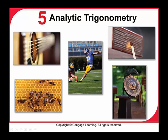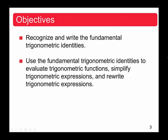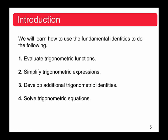We're going to move on to Chapter 5, which is about analytic geometry — we're going to dig deeper into trigonometry. Section 5.1: we're going to learn how to use fundamental identities from trigonometry. The objectives are to recognize and write the fundamental trigonometric identities, use them to evaluate trigonometric functions, simplify trigonometric expressions, and rewrite trigonometric expressions.